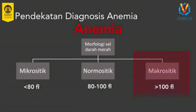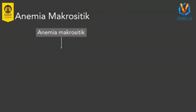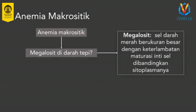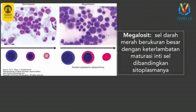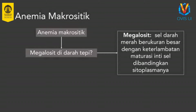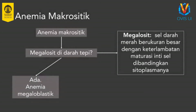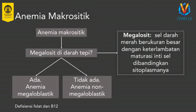Anemia makrositik dibedakan berdasarkan ada tidaknya megalosit di darah tepi. Megalosit adalah sel darah merah berukuran besar dengan keterlambatan maturasi inti dibandingkan sitoplasmanya. Pada megalosit dapat dilihat bahwa sitoplasmanya sudah berwarna semakin merah tidak disertai dengan inti yang mengecil sesuai dengan tahapan maturasinya. Anemia makrositik disertai dengan megalosit disebut sebagai anemia megaloblastik, penyebab terseringnya adalah defisiensi asam folat dan vitamin B12. Sementara anemia tanpa megalosit disebut sebagai anemia non-megaloblastik yang dapat disebabkan oleh penyakit liver, pecanduan alkohol, dan sindrom mielodisplasia.